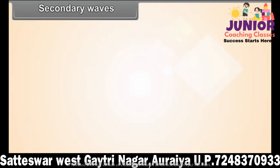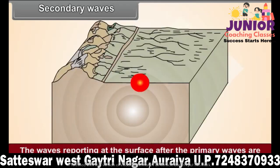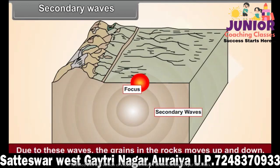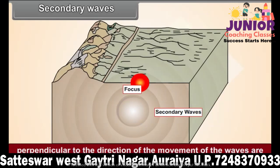Secondary waves. The waves arriving at the surface after the primary waves are called secondary waves. These waves also radiate in all directions from the point of focus of the quake. Due to these waves, the grains in the rocks move up and down, that is, perpendicular to the direction of movement of the waves. Therefore, these waves are very destructive.